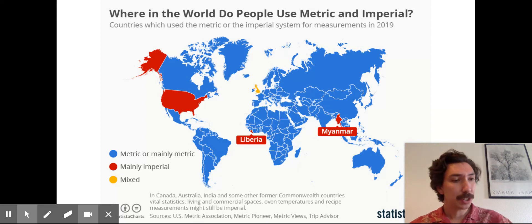This is a map that shows everywhere in the world that uses the metric system in blue. English units are mainly just used in the United States, Liberia, and Myanmar, so not a lot of the world even uses English units.